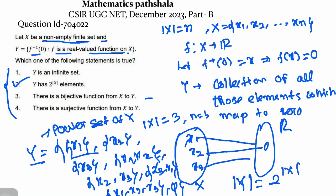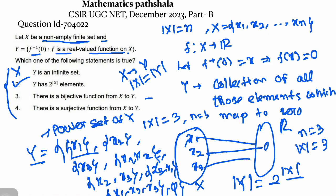Since the cardinality of Y is finite, Y is a finite set. In option 1, it is said Y is infinite, so option 1 is false. In option 3, it is said there is a bijective map from X to Y. For a bijective map, we need the cardinality of X to equal the cardinality of Y. When n = 3, cardinality of X = 3 and cardinality of Y = 2³ = 8, so cardinality of X ≠ cardinality of Y. Therefore, option 3 is false.